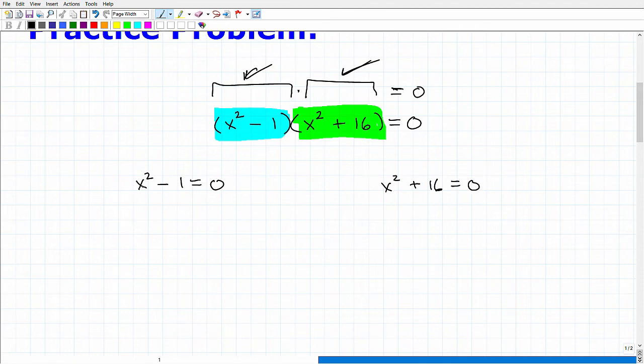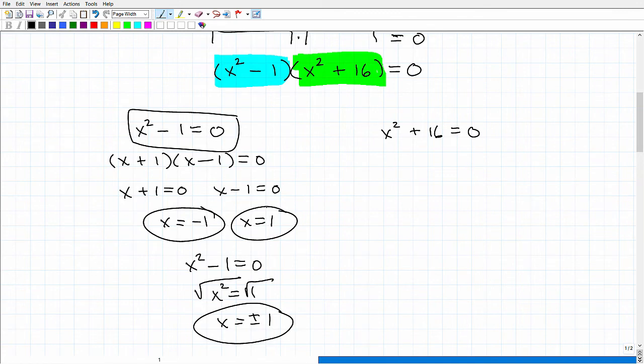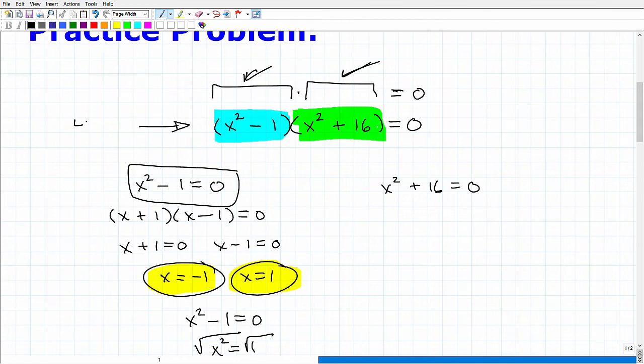We can set each one of these factors equal to zero and solve. We have x squared minus one equals zero, and x squared plus 16 equals zero. This is pretty easy. I could do this one of two ways. I could factor this: x plus one times x minus one equals zero. Then we have x plus one equals zero, so x minus one equals zero. We get x equals negative one and x equals positive one. Or I could have just solved this quadratic equation by moving the one over: x squared equals one. Take the square root of both sides: x equals positive negative one. We found two of the four solutions we need to find.